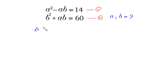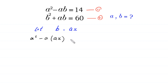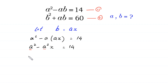Now, we suppose that b is equal to ax. In Equation 1, we put the value of b as ax: a squared minus a times ax equals 14, which gives a squared minus a squared x equals 14. From here we can factor out a squared: a squared times (1 minus x) equals 14. We name this Equation 3.